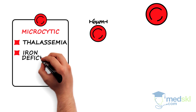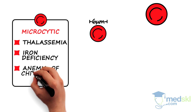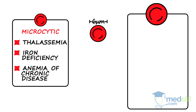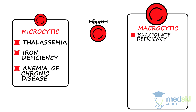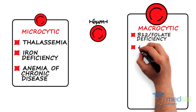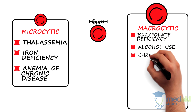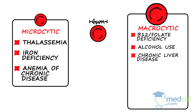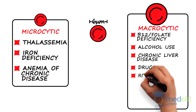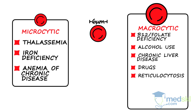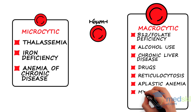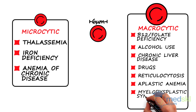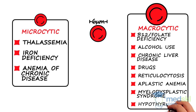iron deficiency, or anemia of chronic disease. Macrocytic anemia can be caused by B12 or folate deficiency, alcohol use, chronic liver disease, drugs such as methotrexate, reticulocytosis, aplastic anemia, myelodysplastic syndrome, or hypothyroidism.